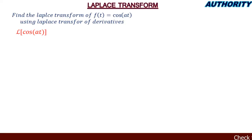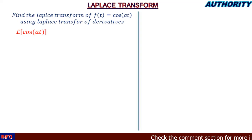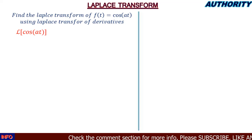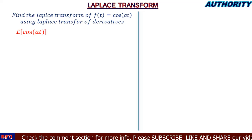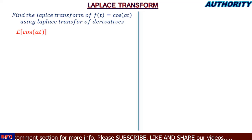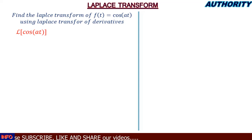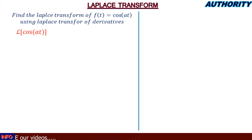Alright, welcome again. Today let's take a look at this problem: find the Laplace transform of f(t) = cos(at) using the Laplace transform of derivatives. In some of our previous videos we treated this problem using different methods — the method of substitution and using first principles. In this lesson we are going to use a different method called the Laplace transform of derivatives.